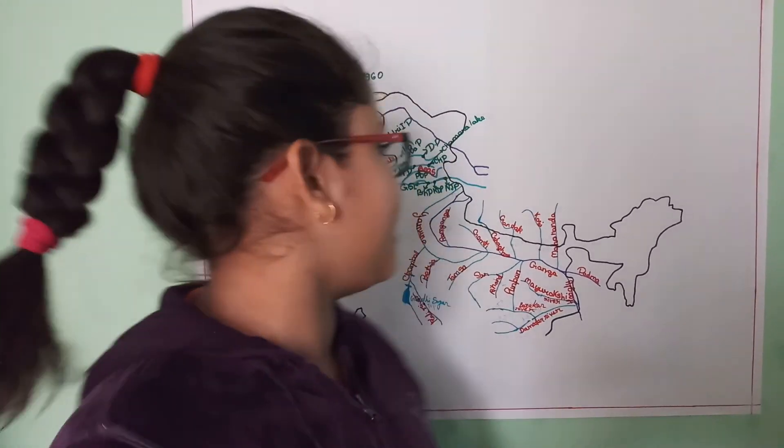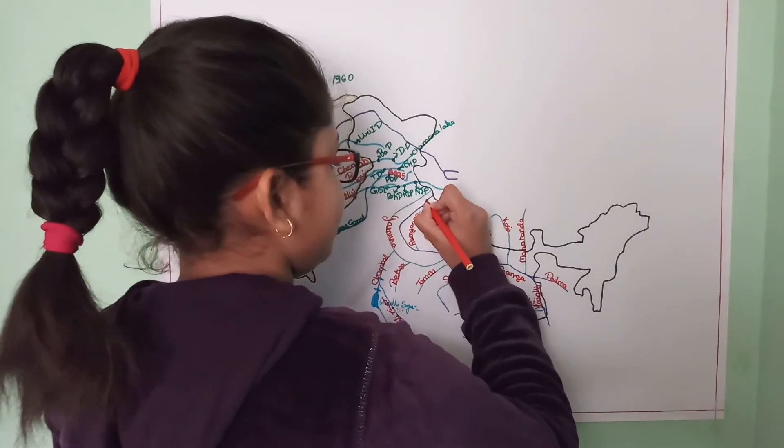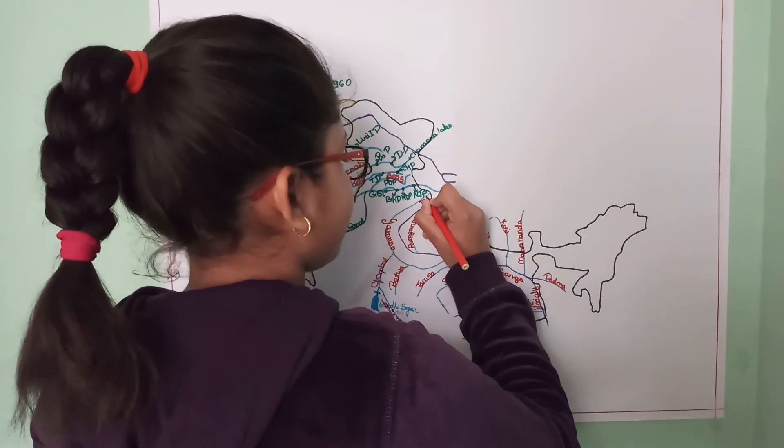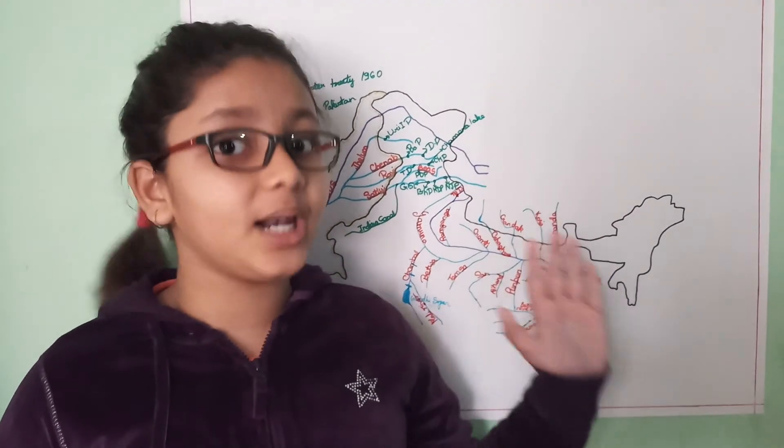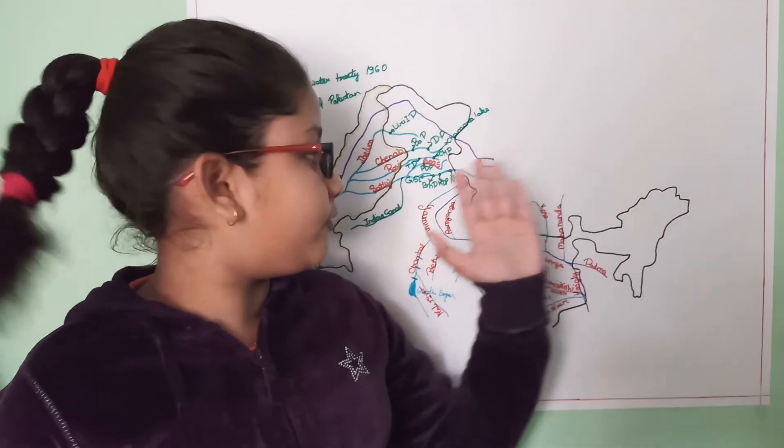First we will start from the Tehri project. It is constructed at Tehri at the confluence of the Bhilangana and Bhagirathi rivers. It is the highest dam in India and the total power capacity of this dam is 1000 megawatt.